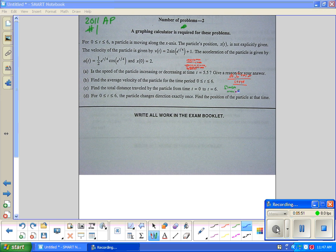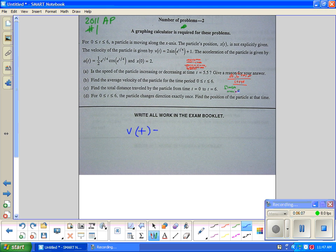Part D: From zero to six the particle changes direction exactly once. Find the position of the particle at the time it changes direction. When a particle changes direction what do we know about the velocity? Zero. It's going positive to negative, it's going to be zero. It's a critical point of the position function. So the question is where does this equal zero? So I just write this and then use your solver. You plug in this function equals zero.